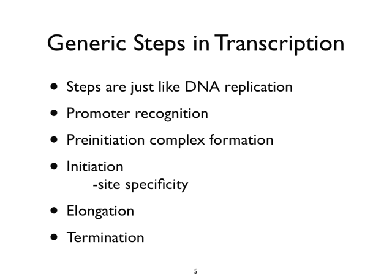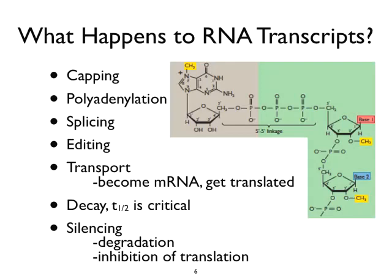The steps are just like DNA replication: we have promoter recognition — think of that as the origin. We have formation of a pre-initiation complex, where auxiliary proteins recognize a sequence, bring a polymerase to a site, and prime to initiate. Initiation occurs at a specific site, a demonstrated distance downstream from a nucleotide sequence called a TATA box. We then have elongation — extension of the growing RNA chain — and termination.